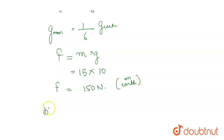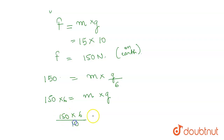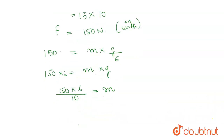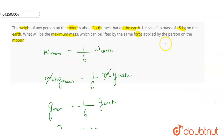Now the same force of 150 N is applied on the moon. So 150 = m × (g/6), which gives 150 = m × (10/6). Rearranging, m = 150 × 6 / 10 = 90. So 90 kg is the maximum mass that can be lifted on the moon by the person using the same force.